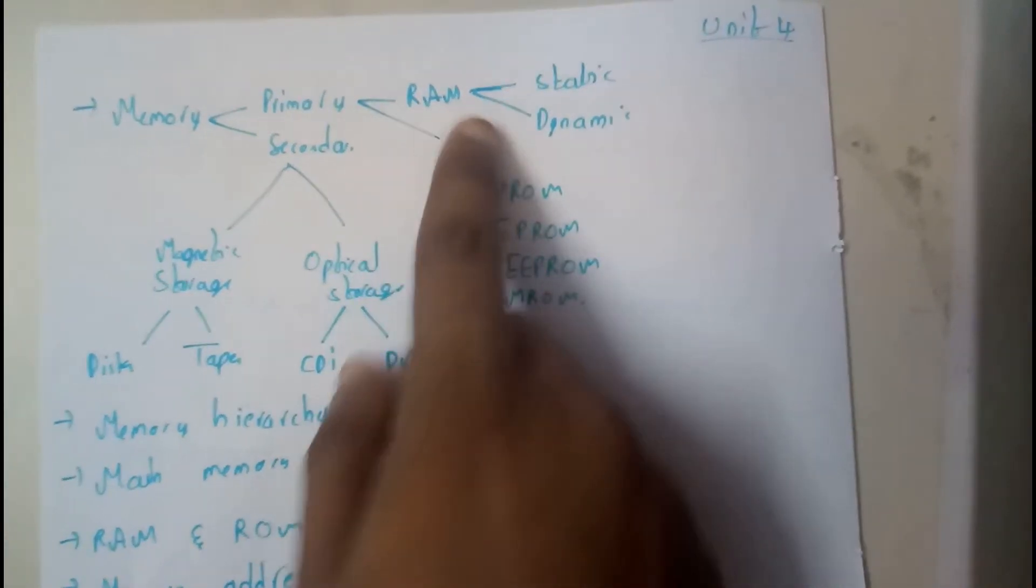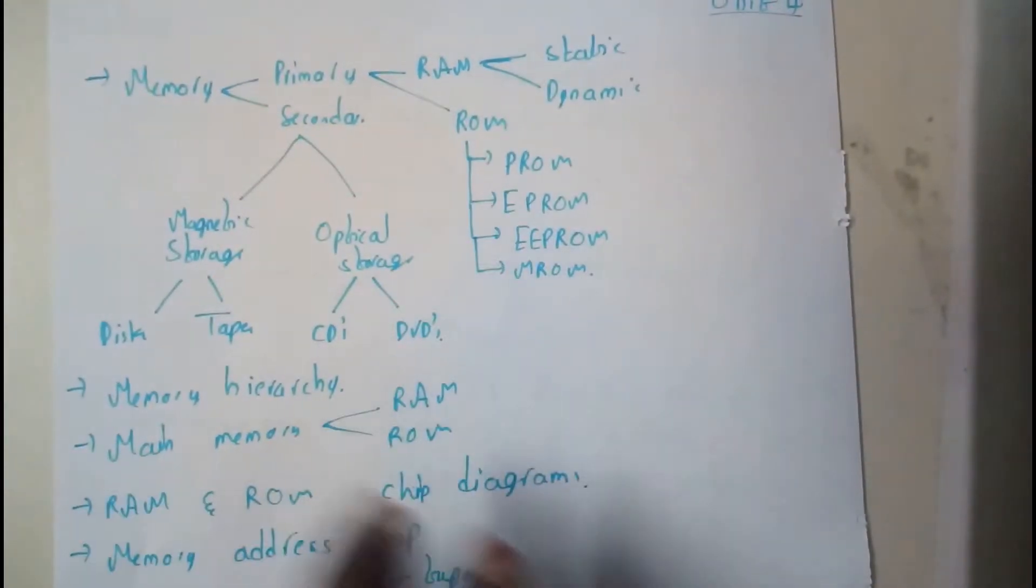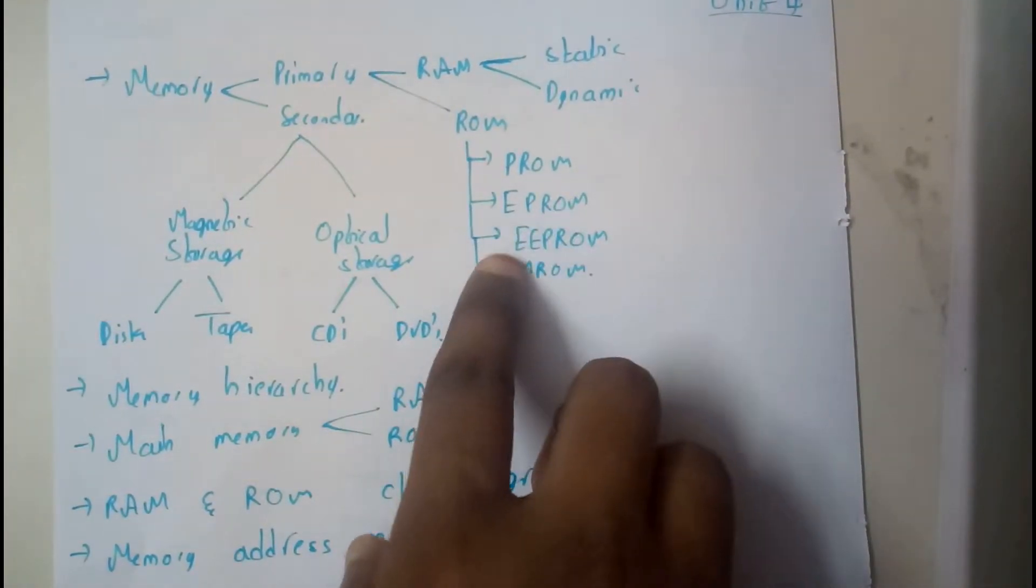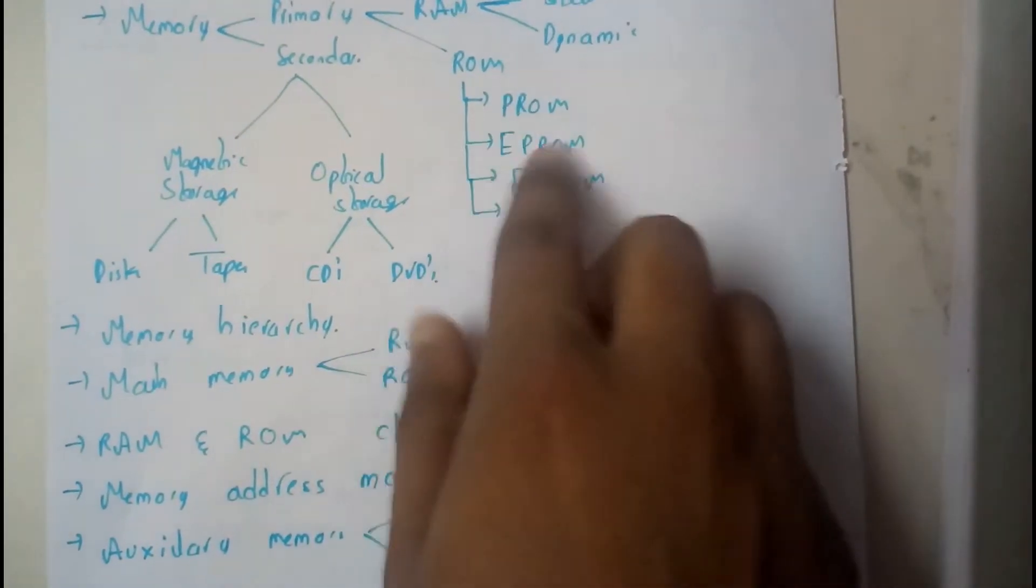RAM is divided into static and dynamic, while ROM is divided into different types: PROM, EPROM, EEPROM, and MROM. We discussed these types in detail.